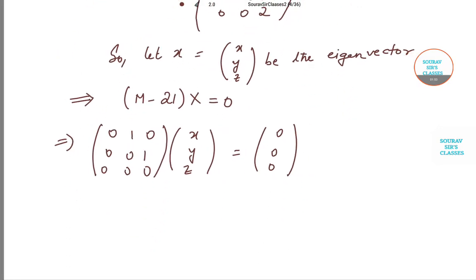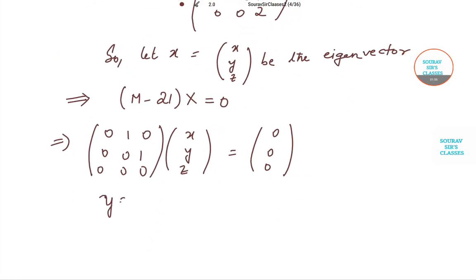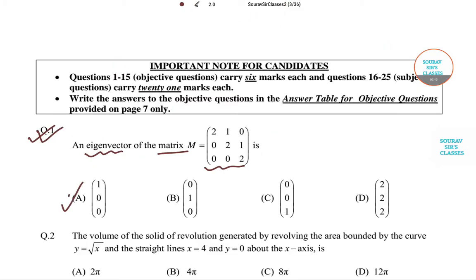So this implies x = (1, 0, 0). So the correct answer will be option number A.